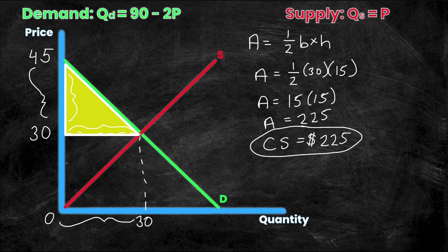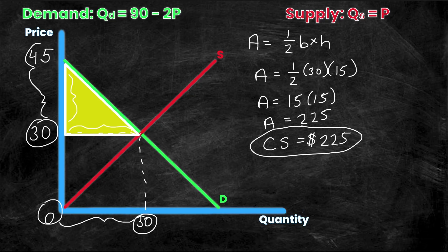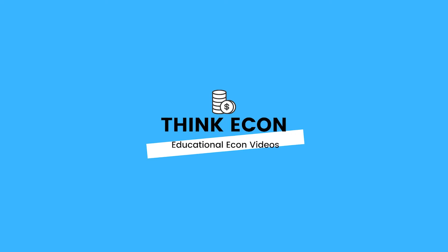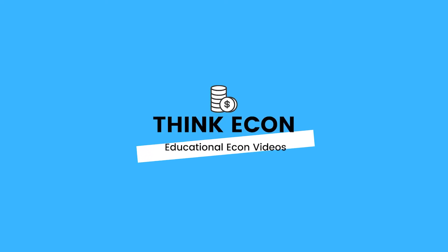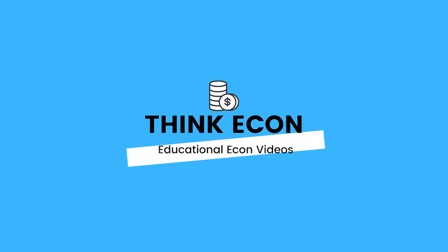To recap: first we found the equilibrium price and quantity — both 30 — then we found the intersection points of the supply and demand curves on the price axis, giving us 0 and 45. Using those, we found the dimensions of the consumer surplus triangle and calculated it as $225. We'll do a similar video on producer surplus next. If you don't remember how to calculate equilibrium, check out our dedicated video on that. If you enjoyed this, please like, subscribe, and comment what economic concepts you'd like us to cover. Thanks for watching!